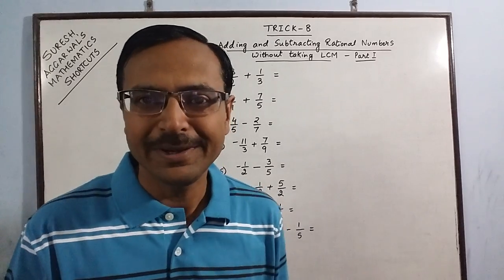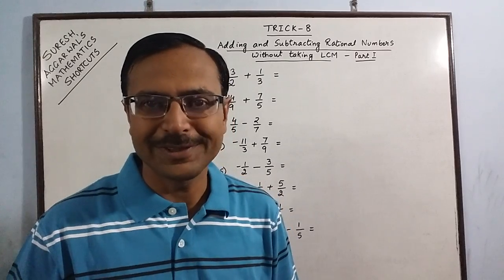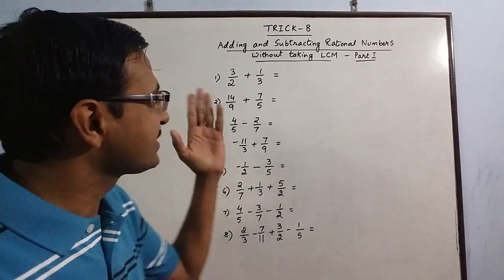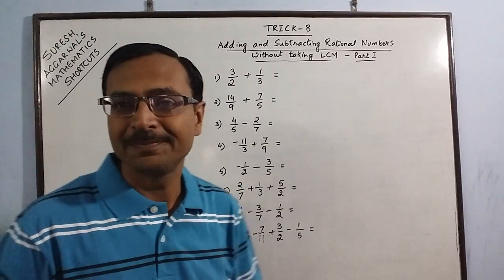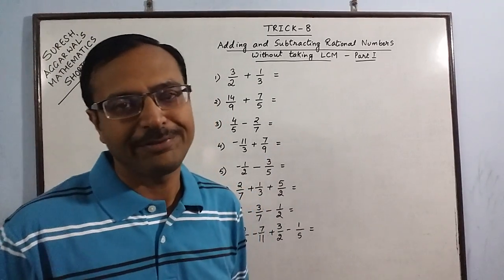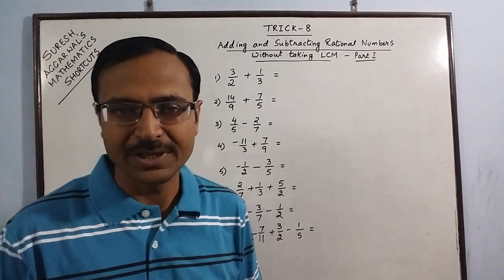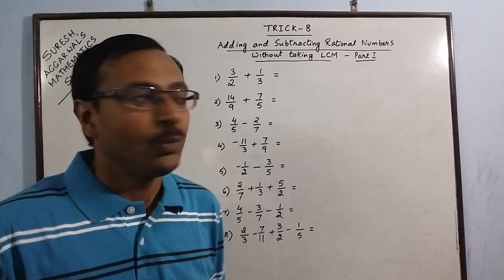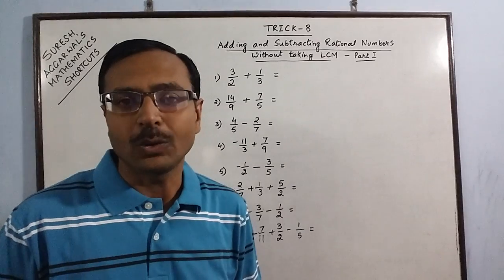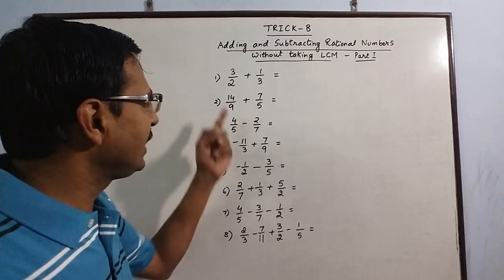Hello students, today I am here with one of the most awaited topics, which starts from class 6th onwards and continues up to the level through which you are learning mathematics. This is adding and subtracting of rational numbers. Usually the procedure we adopt is to take LCM, and that concept is taught to students first. Today I am going to demonstrate how we can add or subtract rational numbers without actually calculating the LCM. Let me demonstrate one very simple example: 3/2 plus 1/3.